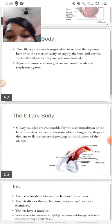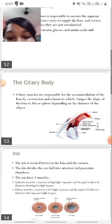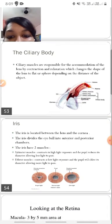Aqueous humor contains glucose, amino acids, and respiratory gases for diffusion. Now the ciliary body also contains the ciliary muscles which are responsible for accommodation of the lens by contraction and relaxation, which changes the shape of the lens to either flat or spherical depending on the distance of the object. Next is the iris.